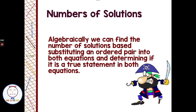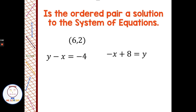If it works in both equations, then we know it is a solution to the system of equations. If it doesn't work in both, then it's not a solution. This is what a typical problem would look like — it says: is the ordered pair a solution of the system of equations?